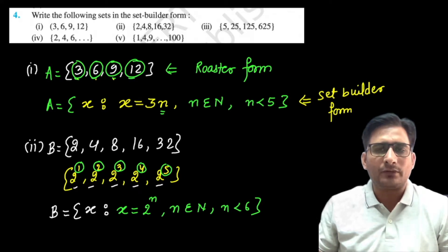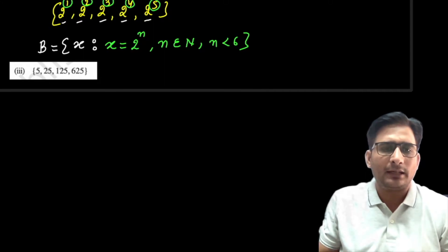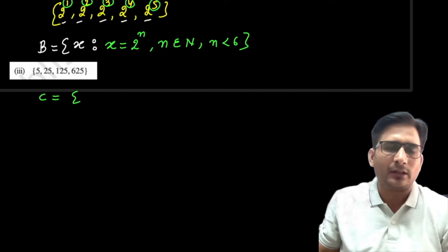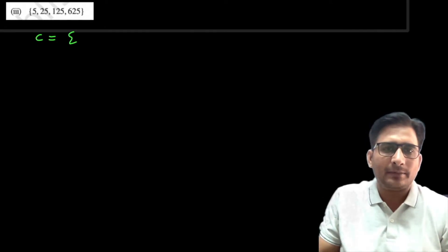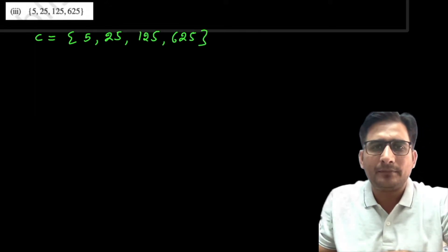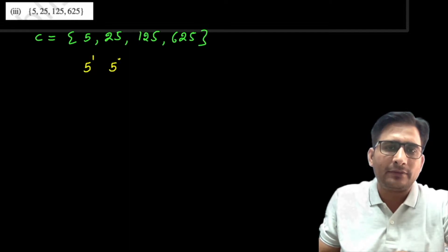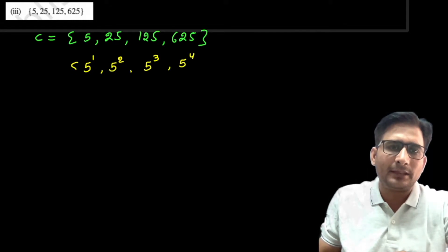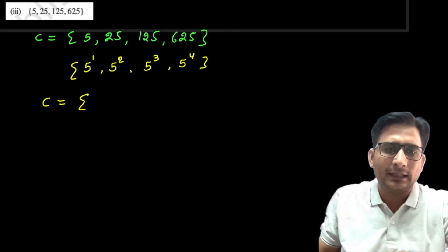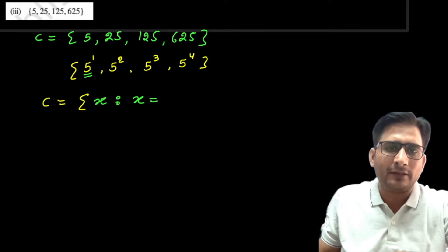Now the third part: Set C = {5, 25, 125, 625}. Looking at the pattern: 5¹, 5², 5³, 5⁴. In set builder form, we start with curly brackets, write x, then semicolon, then define x. Here x = 5ⁿ — the base 5 is fixed and the exponent changes as 1, 2, 3, 4.